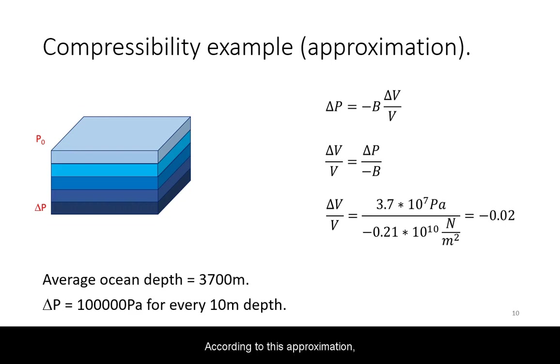According to this approximation, the density of ocean water at its bottom is only about 2% greater than at the surface.